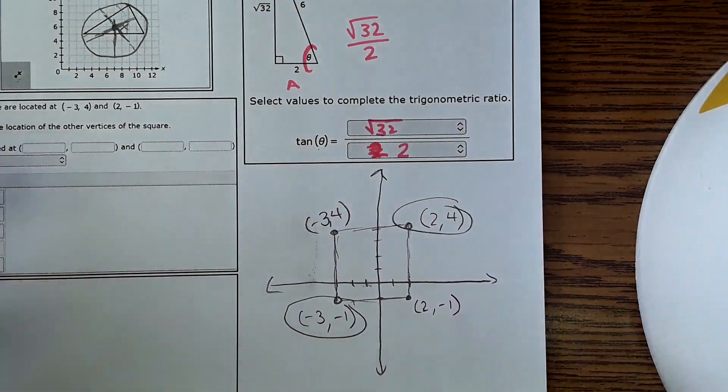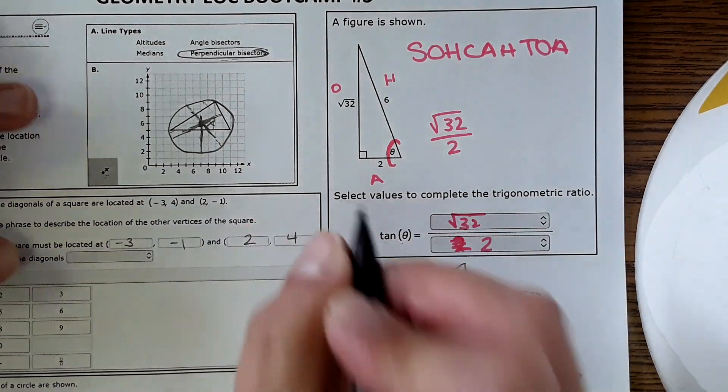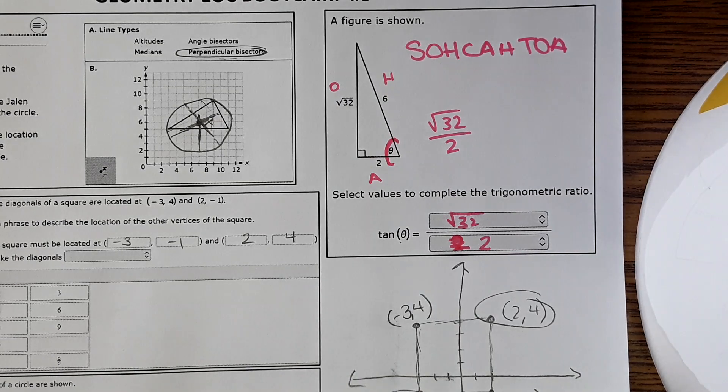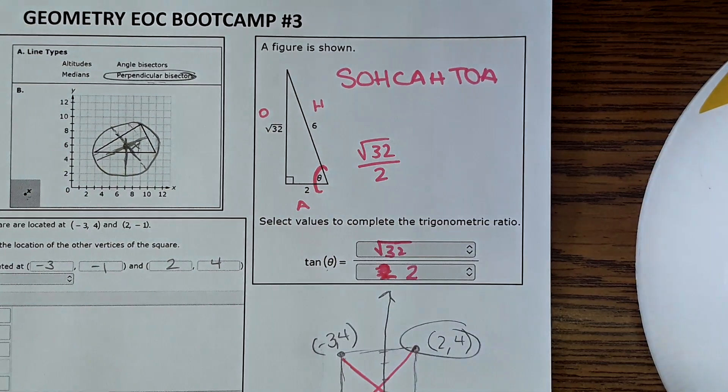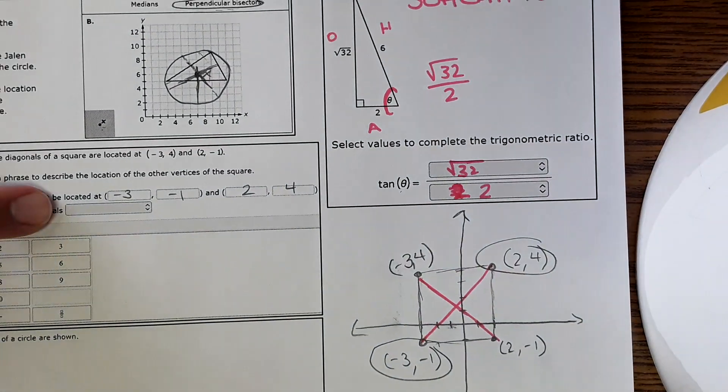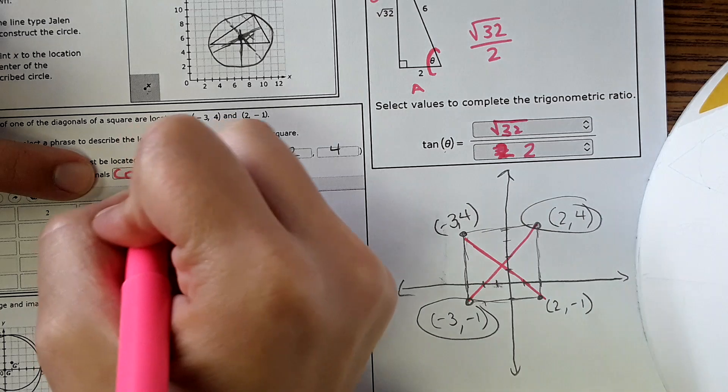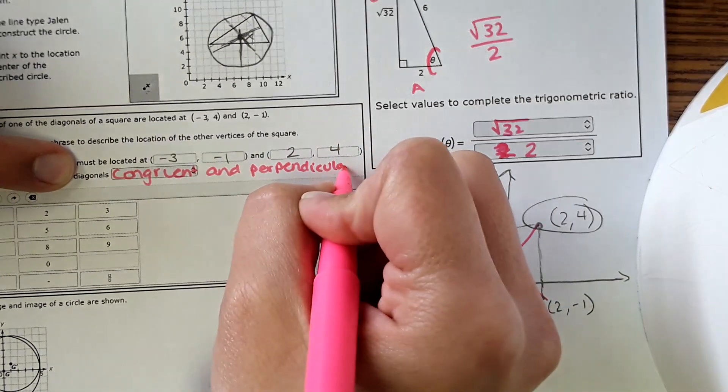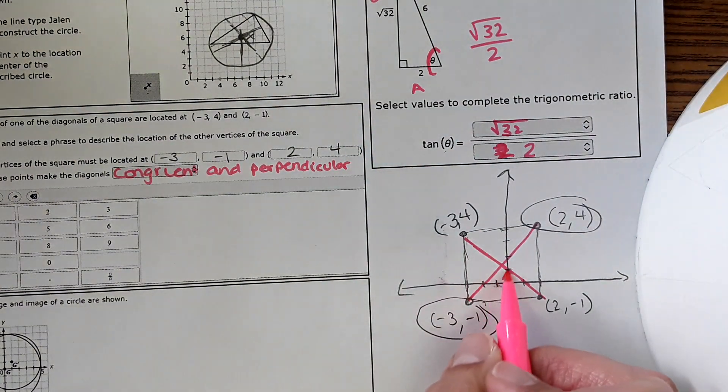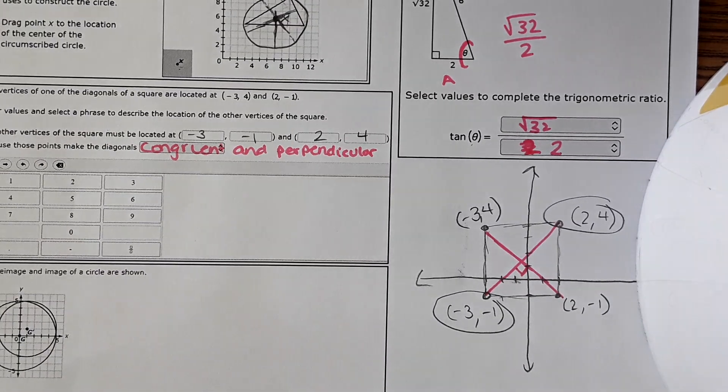So these are my two answers that I'd put in these boxes. So I have negative 3, negative 1, and 2, 4. Then it says those diagonals would be what? Well, if you sketch out a diagonal here and here, and again, you're using a drop-down and you're just looking at the answer choices. The correct answer is congruent and perpendicular. And you can see that those diagonals would be the same length and they also intersect at a 90 degree angle.